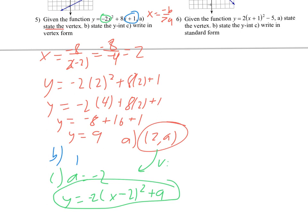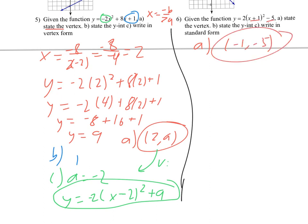Alright, we can compare this to number 6. On number 6, it first asks us to state the vertex. That's actually really easy here — we just switch the x value in there, but then keep the y value like that, and that's it. Part B says state the y-intercept. I'm actually going to hold off on that until I do part C, because once I get it in standard form, it's easy to see the y-intercept. The y-intercept is not negative 5 — that's the y value of the vertex.